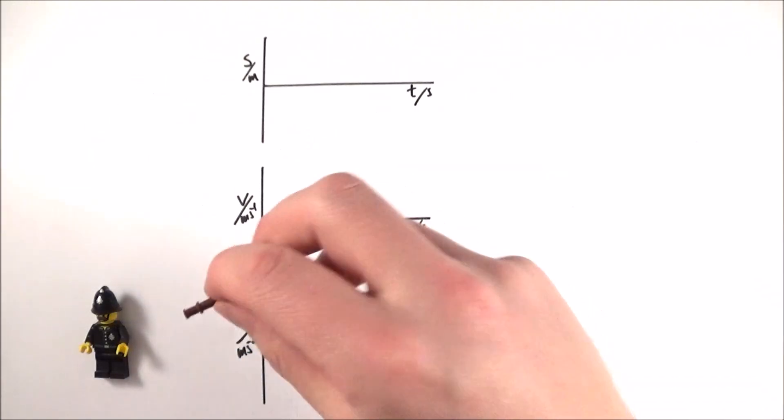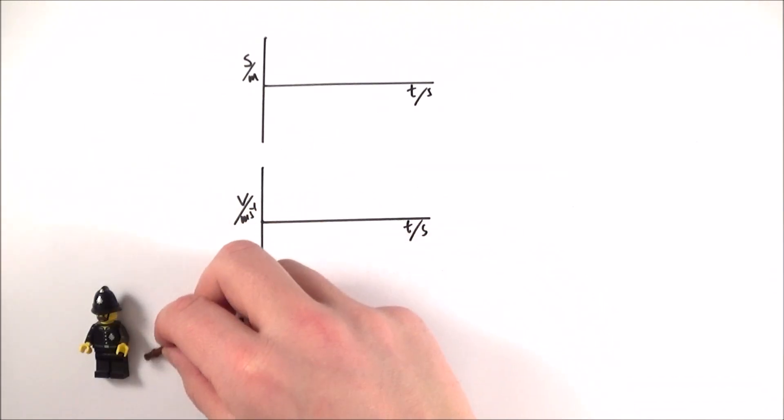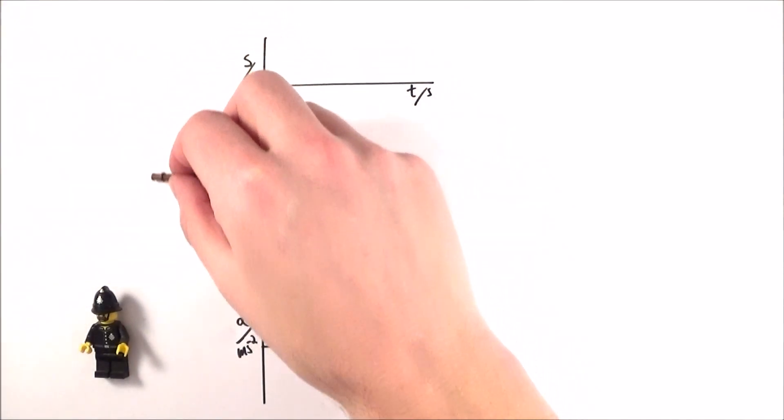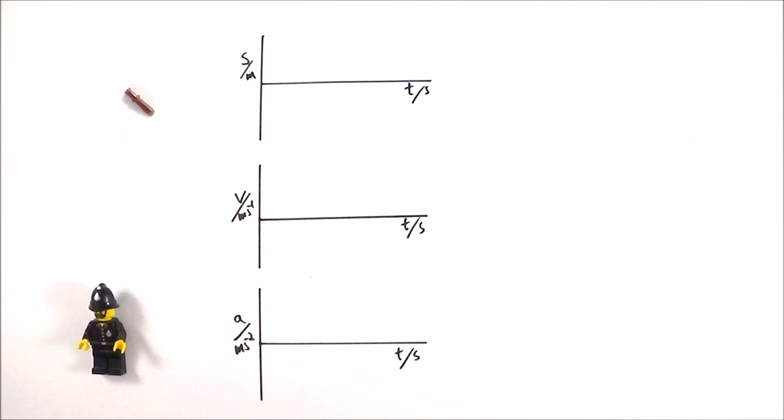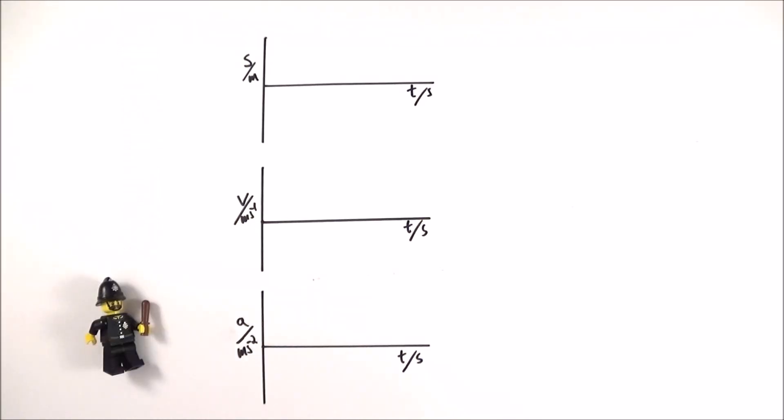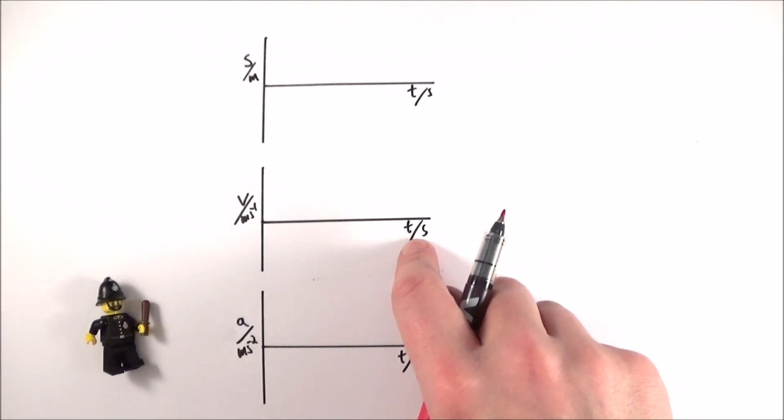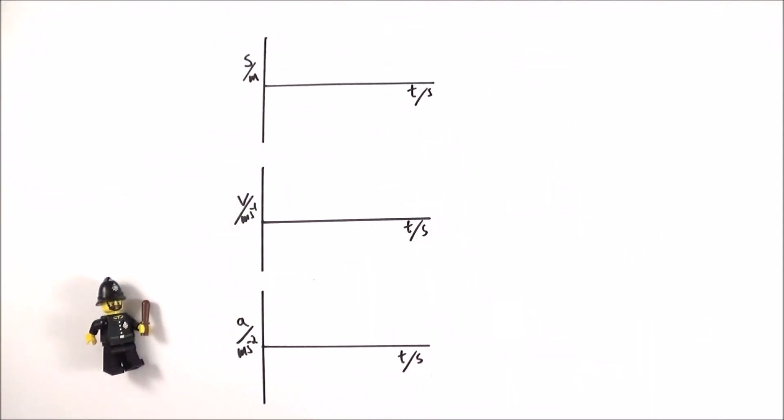Here we have a policeman, and imagine his truncheon gets thrown in the air, rises to a certain height, and then comes back down and he catches it again. What we can do is maybe look at the velocity of the object, its displacement, and also maybe the acceleration.